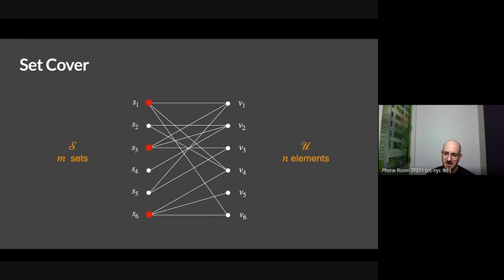Classic optimization problem — we know a lot about it. We know that it's hard to solve exactly unless P equals NP, but you can get pretty decent approximations. In particular, the greedy algorithm achieves a log n plus one approximation, a famous result that we teach in approximation algorithms courses.